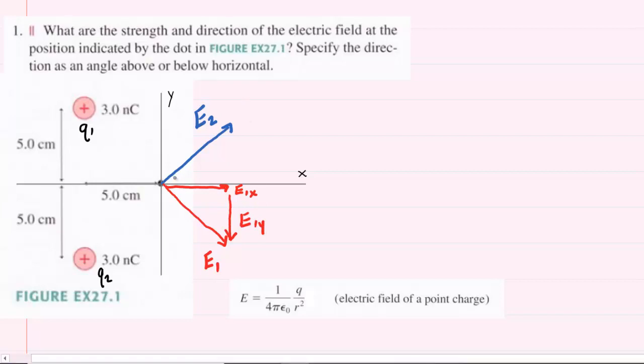And then similarly for E2, we have the x-component pointing along the positive x-axis, we'll call that E2x. And then we have the y-component pointing straight up, and we can call that E2y.